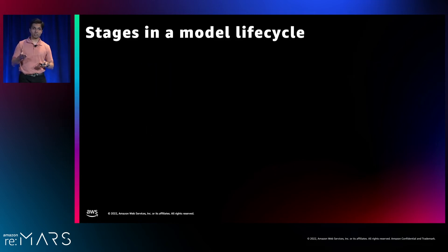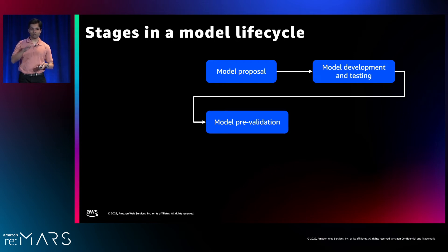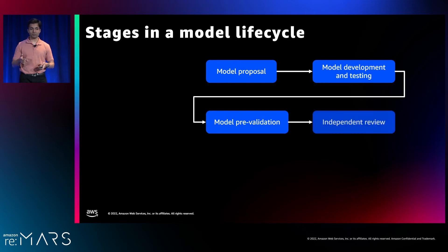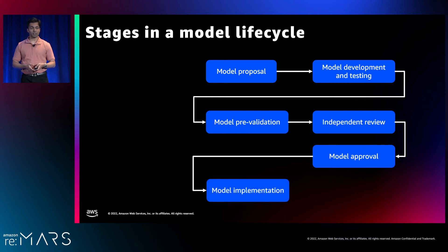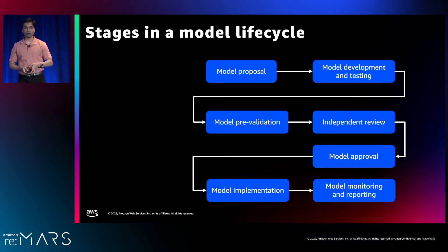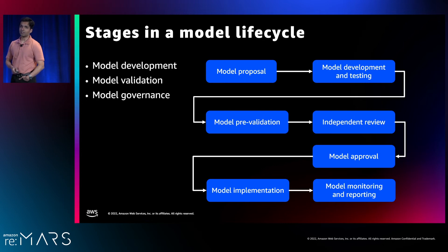Moving on to the stages in the model life cycle: once the model proposal has been made, it goes through development and testing, then pre-validation. So far the developer is the key stakeholder — that's the first line of defense. Then management is responsible for the overall model. An independent reviewer comes in and gives approval for how the model is to be used and where. Once completed, you proceed to model implementation and ultimately model monitoring and reporting. Three stages — model development, validation, and governance — are all covered at different stages of the life cycle.